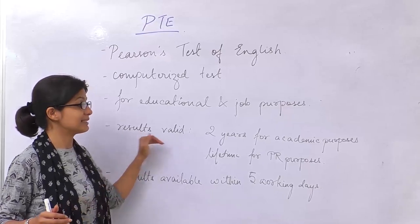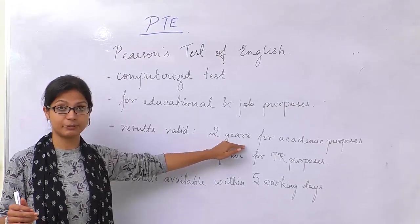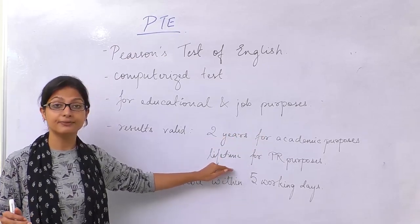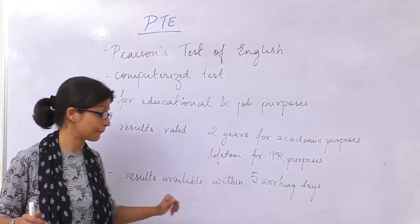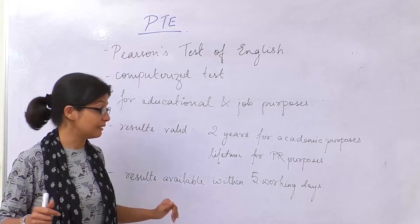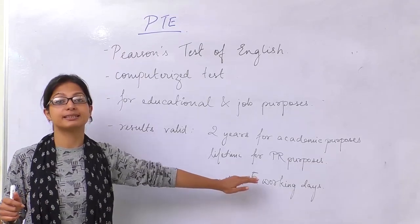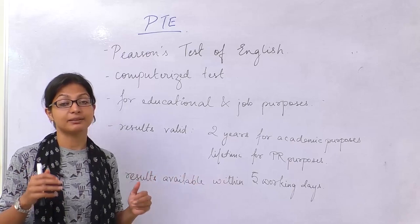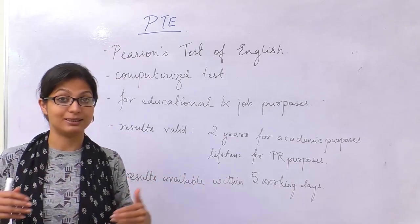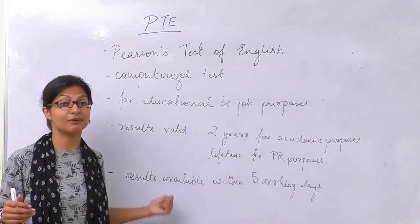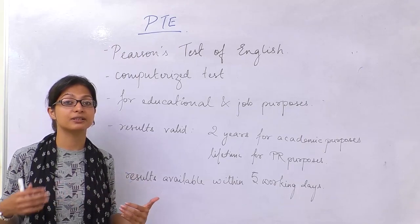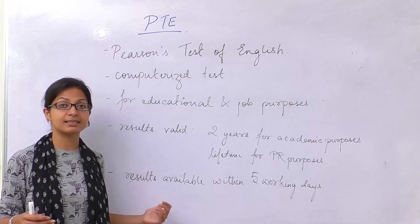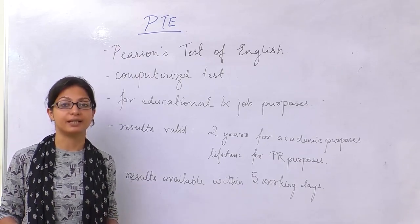The results are valid for two years when you write for educational purposes, and valid for a lifetime for job purposes. The results are available within five business days. Compared to IELTS and TOEFL, this is very fast because IELTS and TOEFL take almost two weeks for their results to be published. PTE results are available within five days.